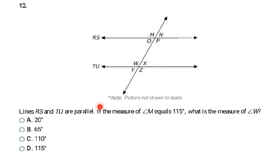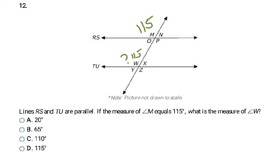Lines RS and TU are parallel, and angle M equals 115 degrees. What is the measure of angle W? Writing 115 by M and a question mark by W, I see that M and W are corresponding angles — both left and up from their intersection. Corresponding angles with parallel lines are congruent, so both are 115 degrees. My answer is D.